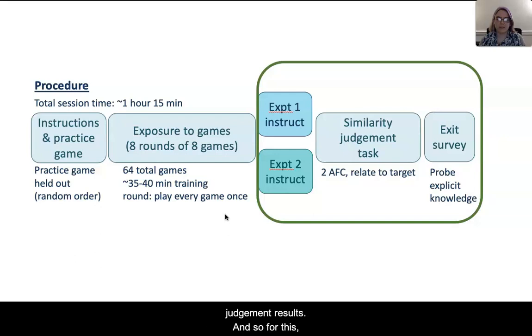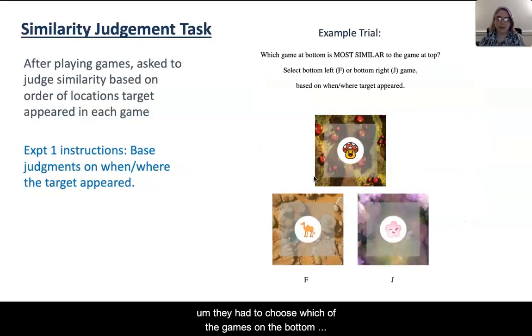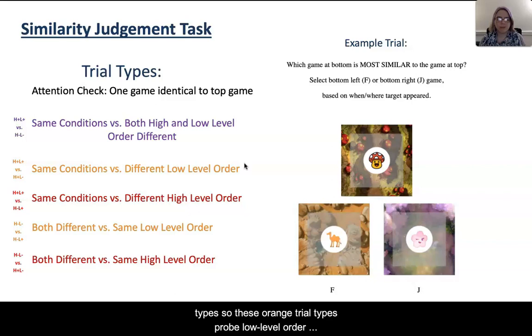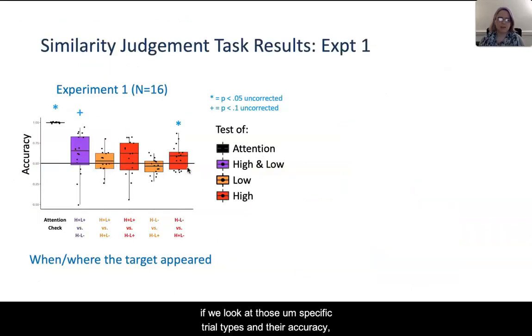Next, we look at the similarity judgment results. For this, they had to choose which of the games on the bottom was more similar to the game on the top based on when and where the target image appeared. There are different trial types. These orange trial types probe low level order knowledge, the red trial types probe high level order knowledge. If we look at those specific trial types and their accuracy, we'll see that people are sensitive to the high level order condition of the games, but they're not using the low level order information.